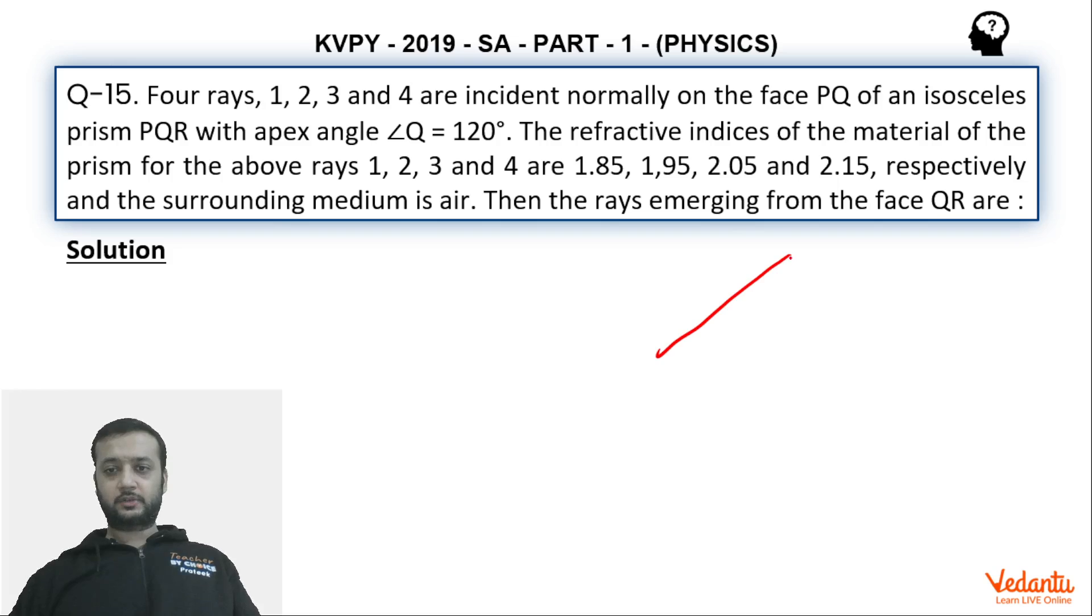So there is an isosceles prism which has an apex angle 120 degrees. So this is P, this is Q and this is R. This angle is 120 degrees. The prism is kept in air. There are four rays, ray 1, 2, 3, 4. All the rays enter the side PQ of the prism normally. That means at an angle of 90 degrees. So that definitely they are going to go without any deviation. Now they are going to strike the, so first let me tell you the data.